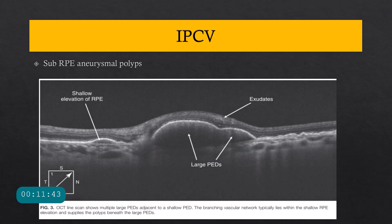Another variant of wet ARMD is IPCV — idiopathic polypoidal choroidal vasculopathy — in which you have sub-RPE aneurysmal polyps and branching vascular networks below the RPE. You will typically see very large PEDs, sometimes a tall PED adjacent to a very shallow PED. The shallow PED usually harbors a network of branching vascular networks typical of IPCV. The polyps are seen below the level of the RPE.